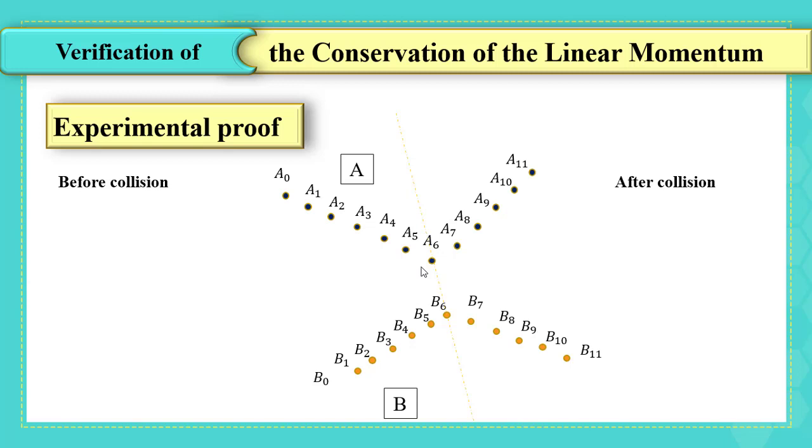Then, what are the conditions the velocity as a vector should verify to be considered constant? Perfect! It is considered constant when it conserves same magnitude and same direction.